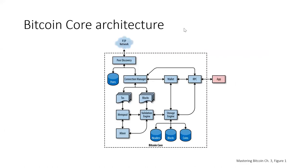Taking a look at our diagram on the Bitcoin Core architecture, everything within the dashed line is part of Bitcoin Core. Outside Bitcoin Core at the top, above peer discovery, you see the peer-to-peer network where this particular node communicates to other Bitcoin nodes. On the right-hand side, next to RPC — short for the RPC API — you see an app communicating to the RPC API, indicating that applications can use the RPC API to interact with the Bitcoin node.